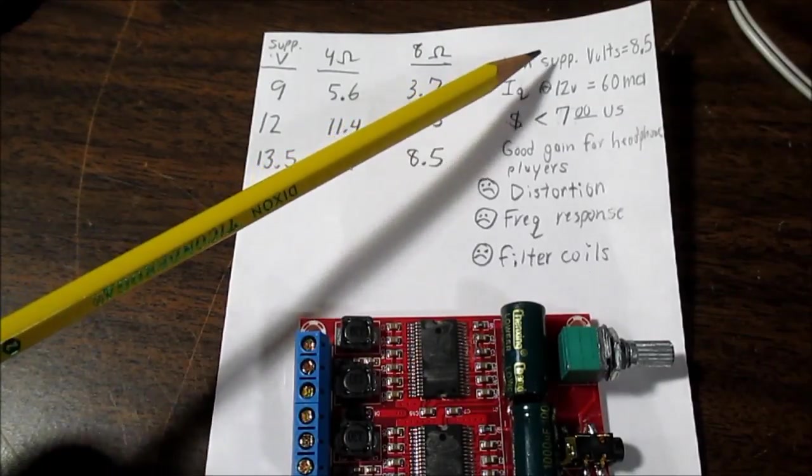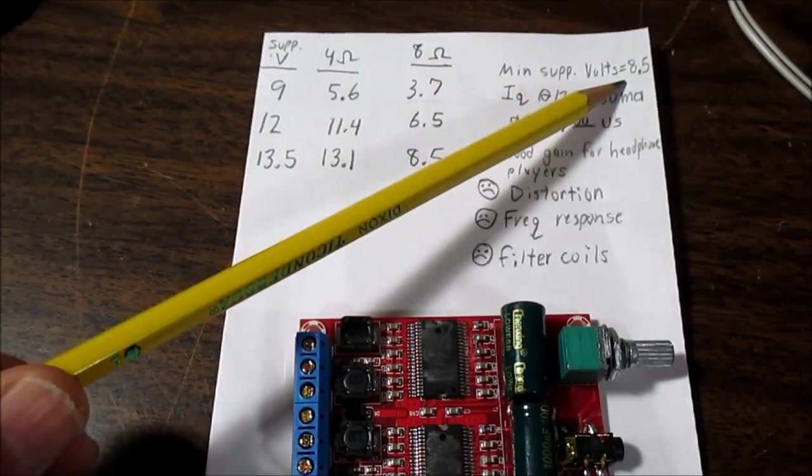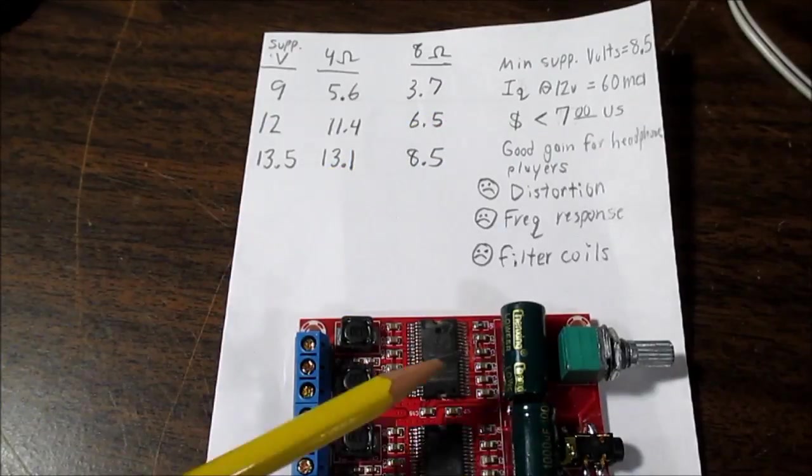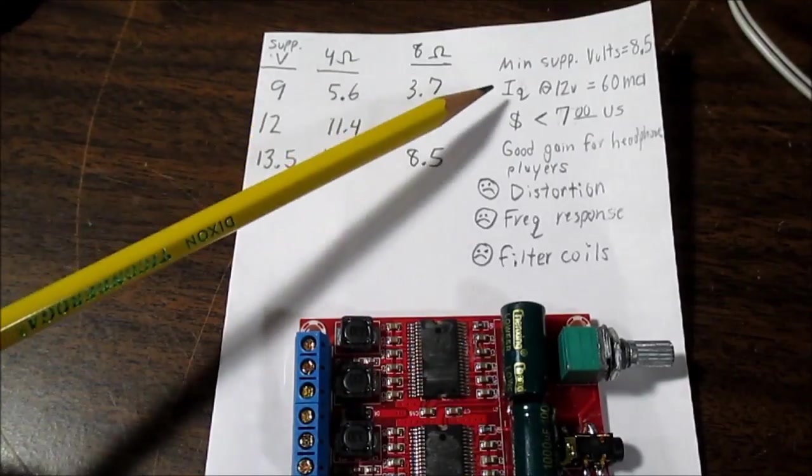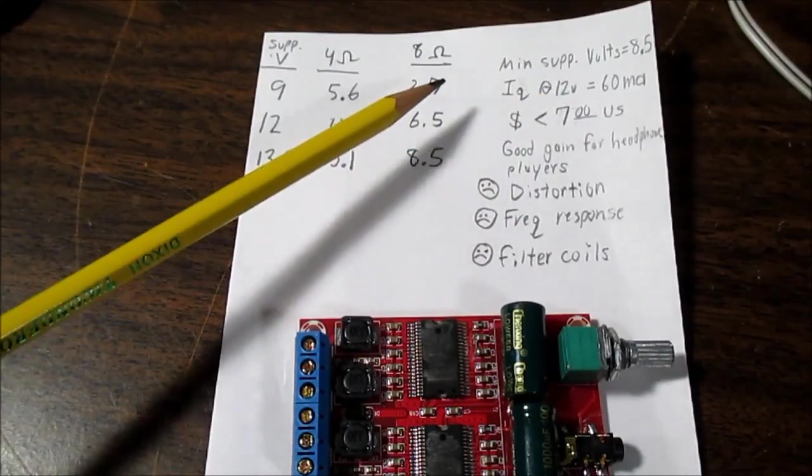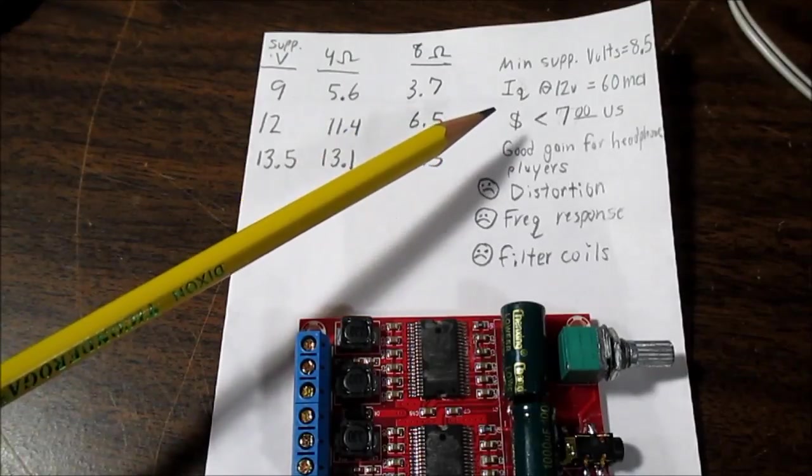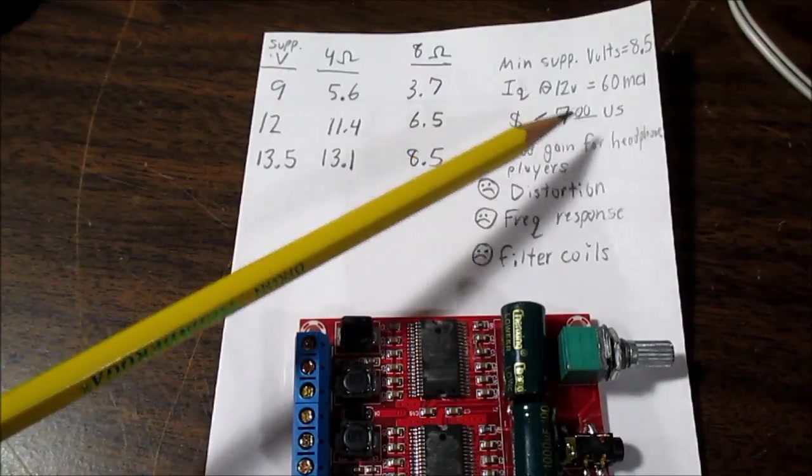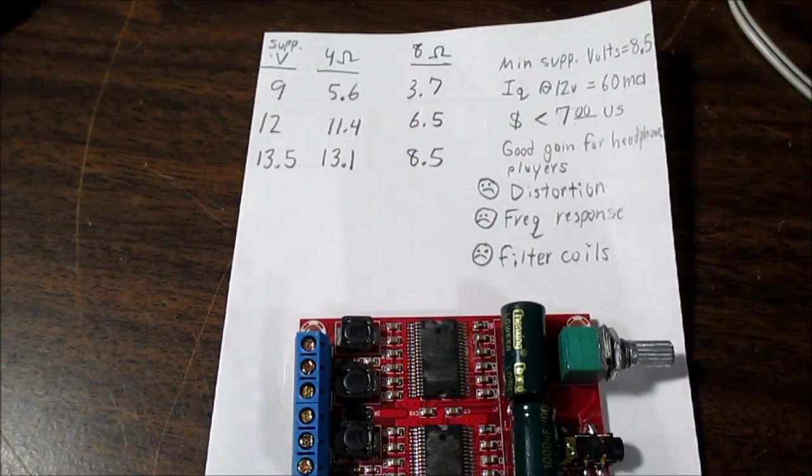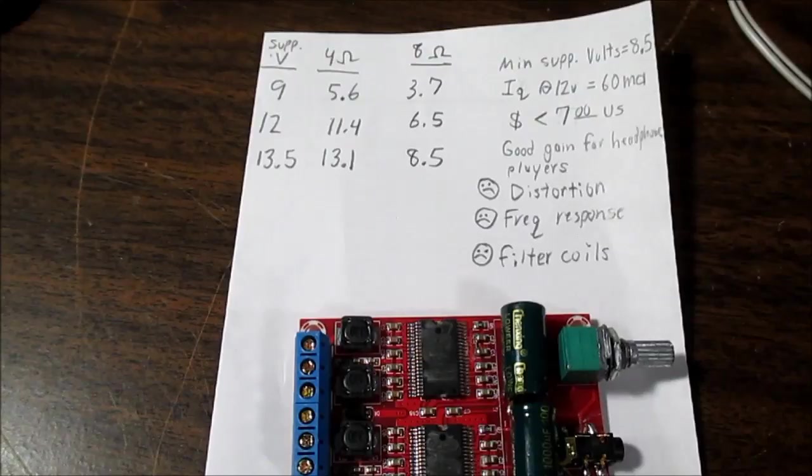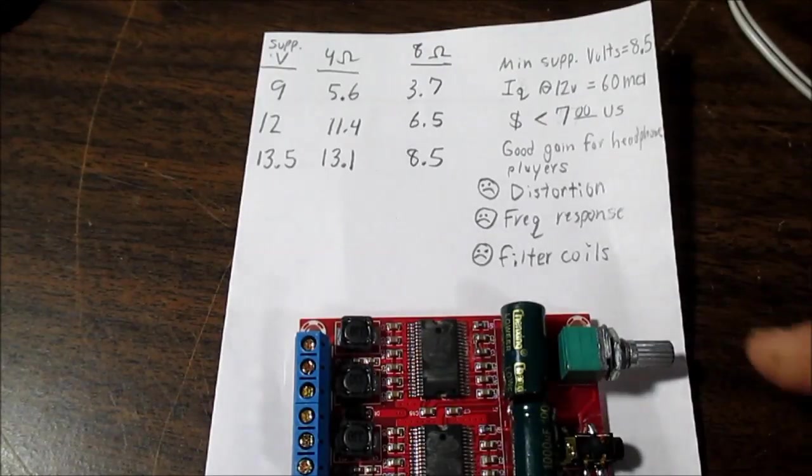The minimum operating supply voltage I tested was 8.5. The quiescent current, in other words the amp just sitting quiet with power, at 12 volts it was drawing 60 milliamps. So it's pretty good for battery use. It was less than $7 on eBay. Lots of sellers have it. So you know, you might find it a little more. You might find it a little less.